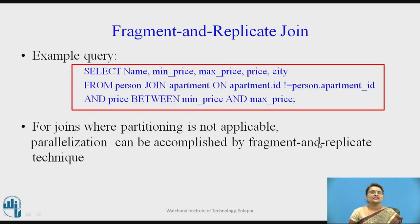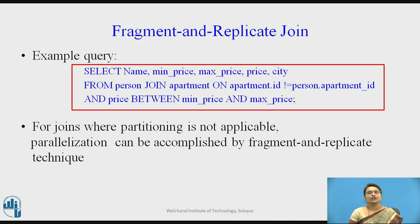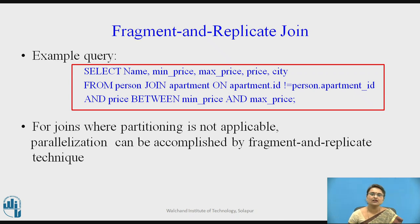Consider this example query: SELECT name, minimum price, maximum price, price, city FROM person JOIN apartment ON apartment ID not equal to person's apartment ID AND price BETWEEN minimum price AND maximum price. This is one example of a non-equijoin query.